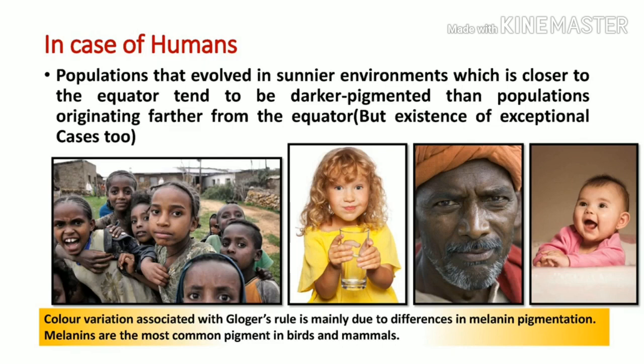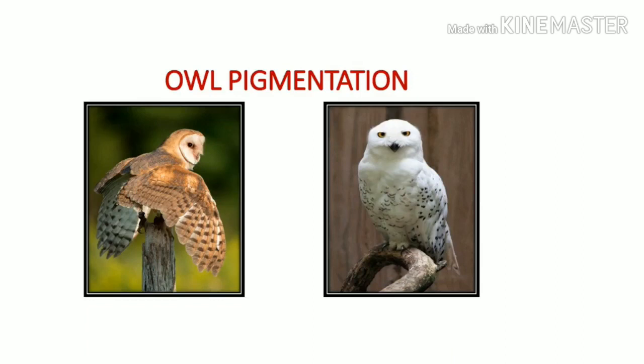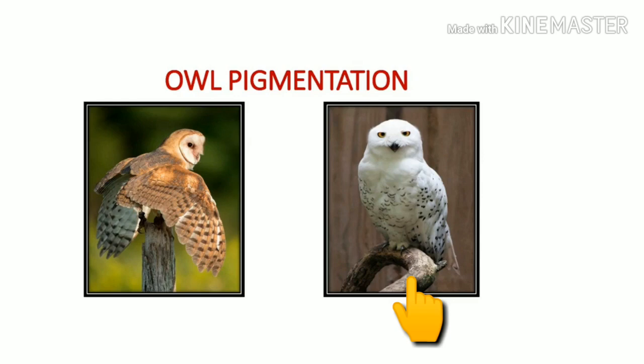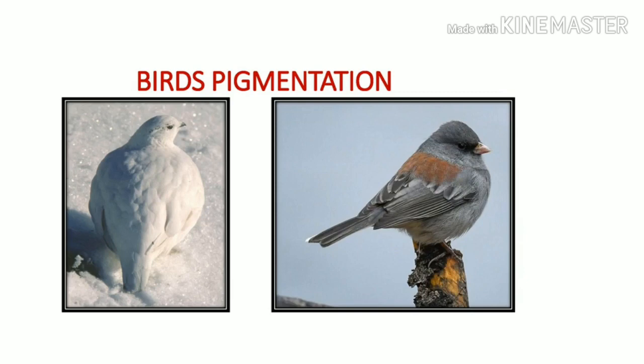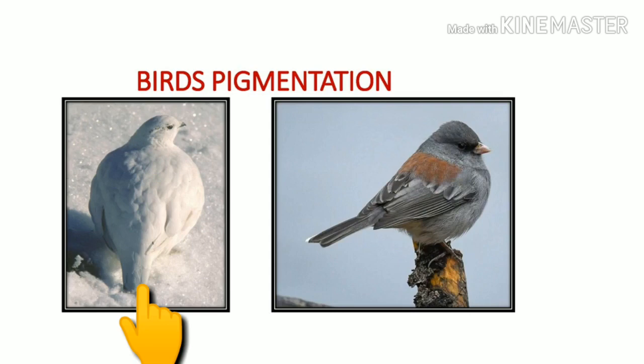The picture shows different skin colors indicating the regions people are from, with some exceptional cases also present. Visual examples show darker pigmented owls belonging to equatorial regions and lighter pigmented owls from polar or colder regions. Similarly, darker pigmented birds belong to equatorial regions and lighter colored birds to polar regions. In this way, Gloger's Rule applies across many examples — there will be a difference in pigmentation when comparing equatorial versus polar populations of people, birds, or mammals.